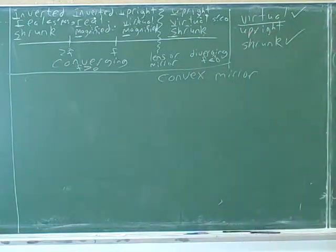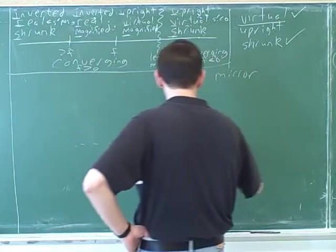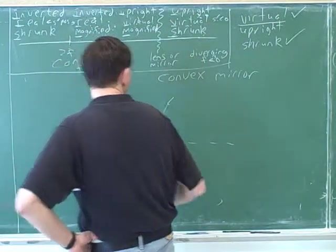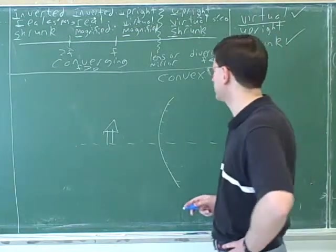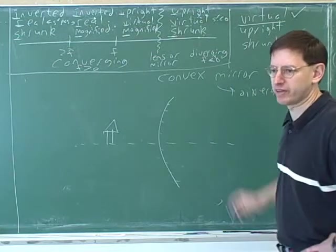Let's do some ray tracing for a convex mirror. We know this is what convex looks like because we're not looking into the cave, and we just have memorized that convex mirrors are diverging. Remember that convex lenses are converging, but convex mirrors are diverging.